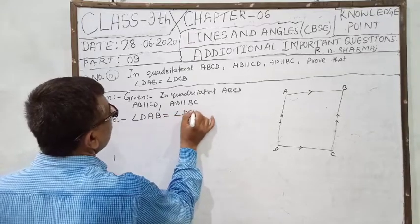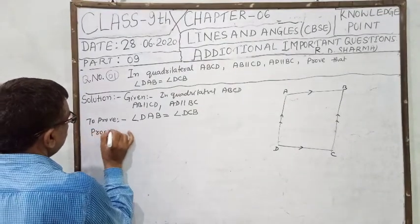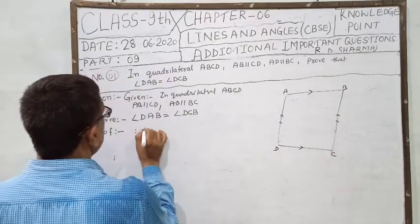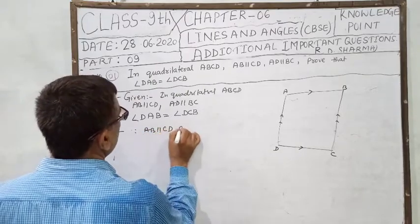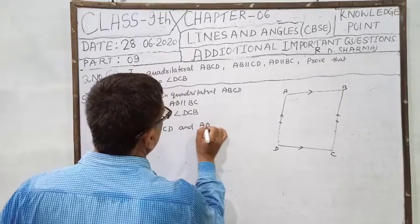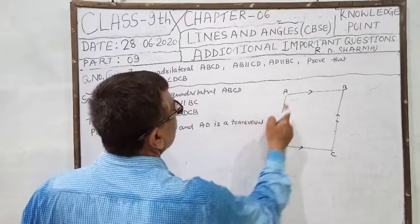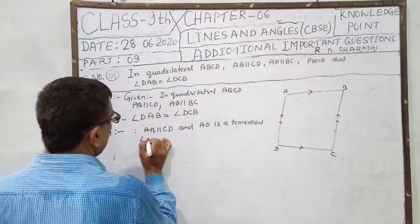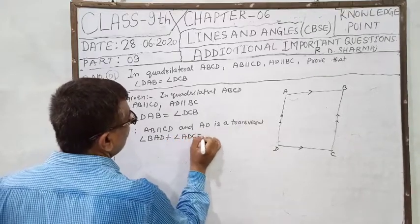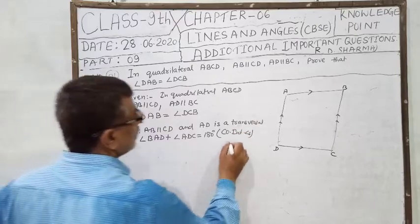To prove: angle DAB equal to angle DCB. Proof: If AB parallel DC and AD is a transversal, then angle BAD plus angle ADC is equal to 180 degrees, co-interior angles. This is equation 1.